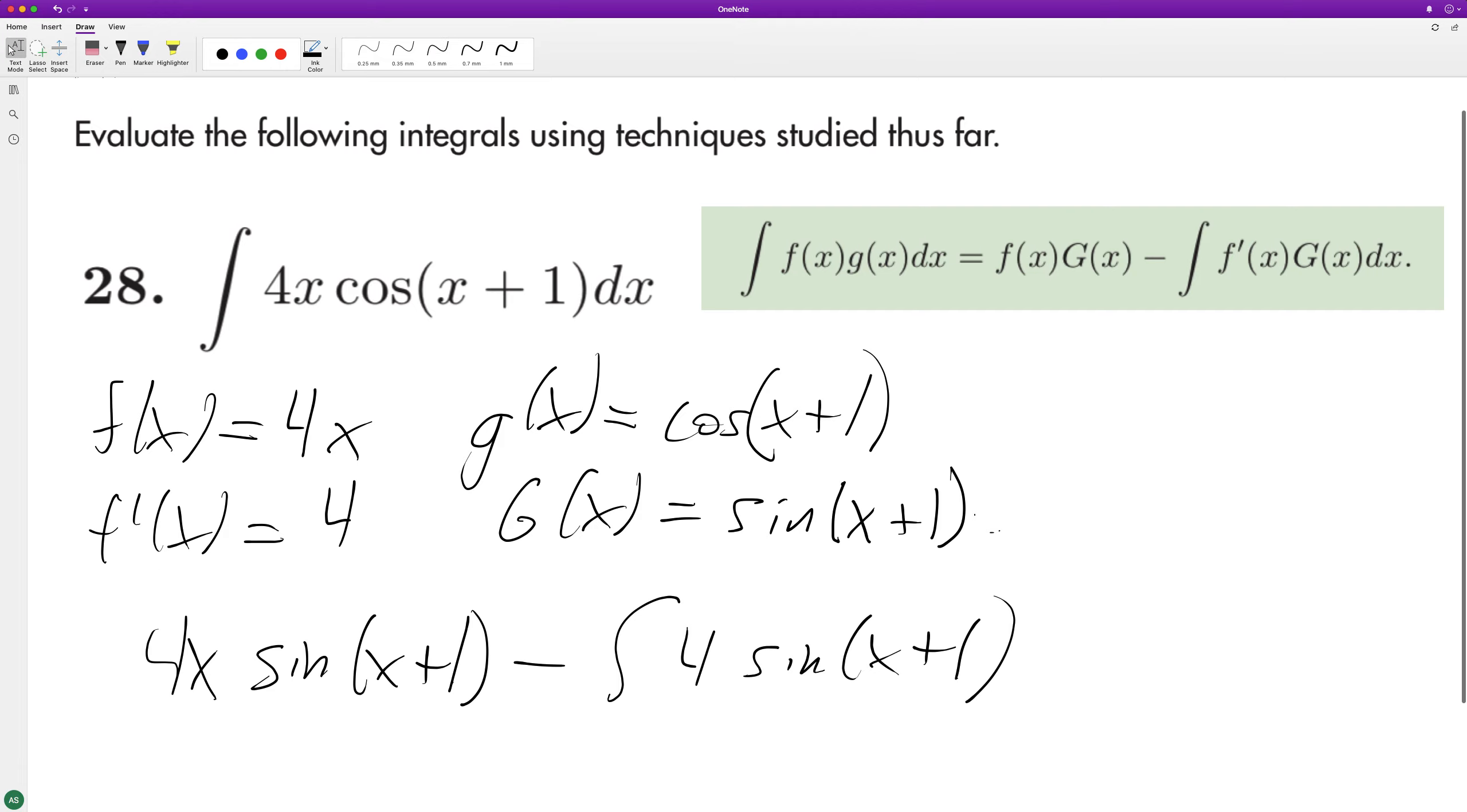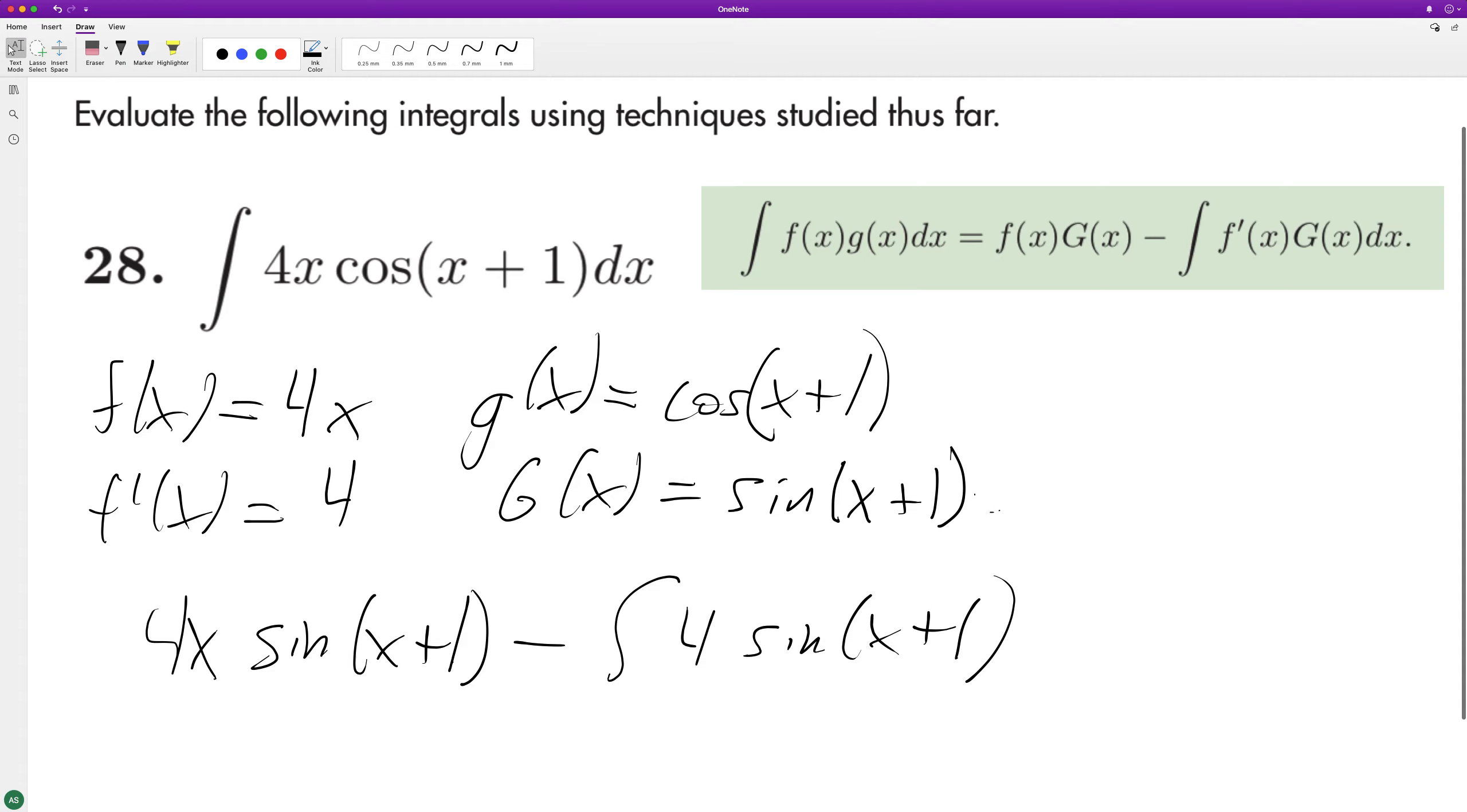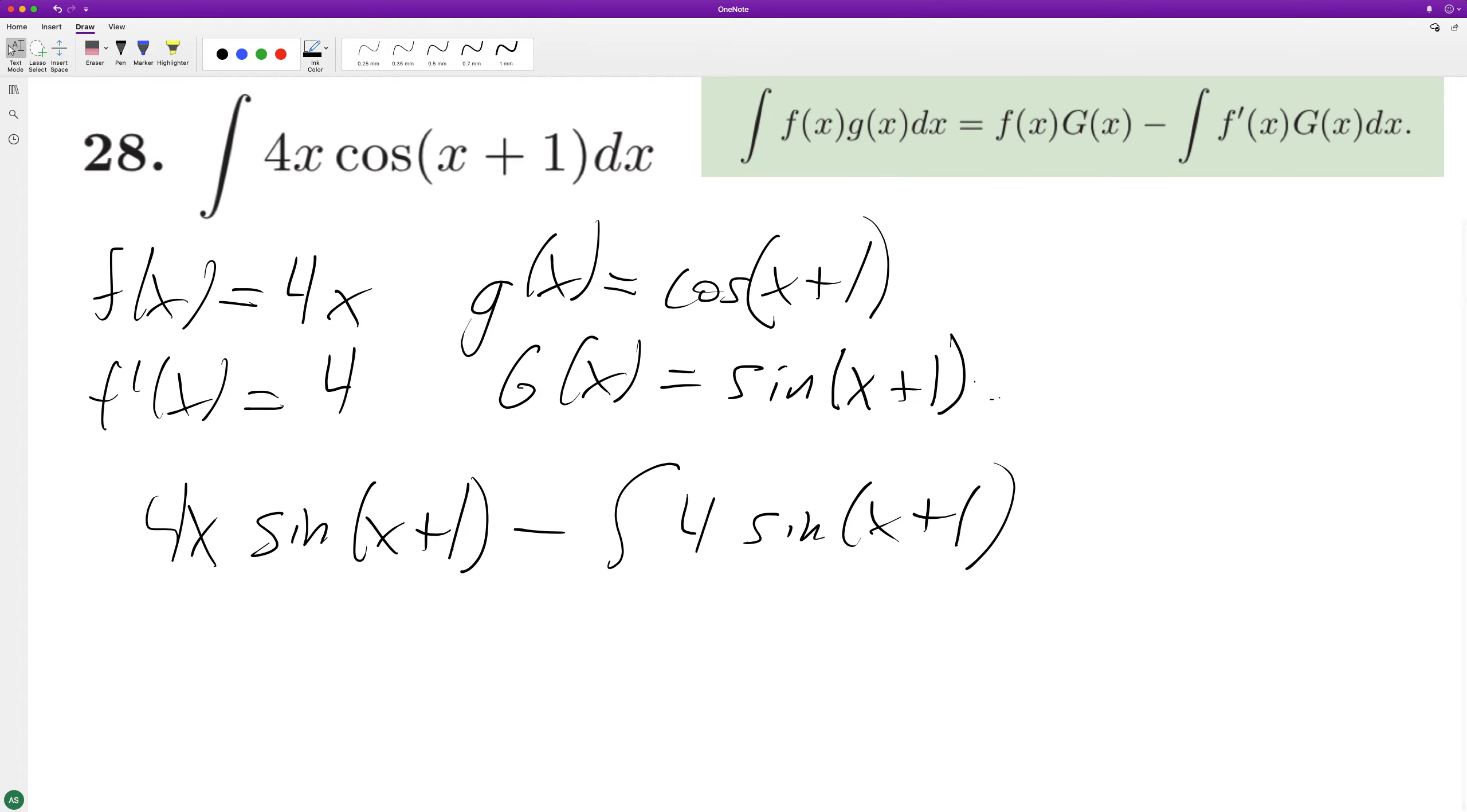What this ends up being - four is a constant, but the integral of sine of x is negative cosine of x, so it's minus and negative, which becomes positive.